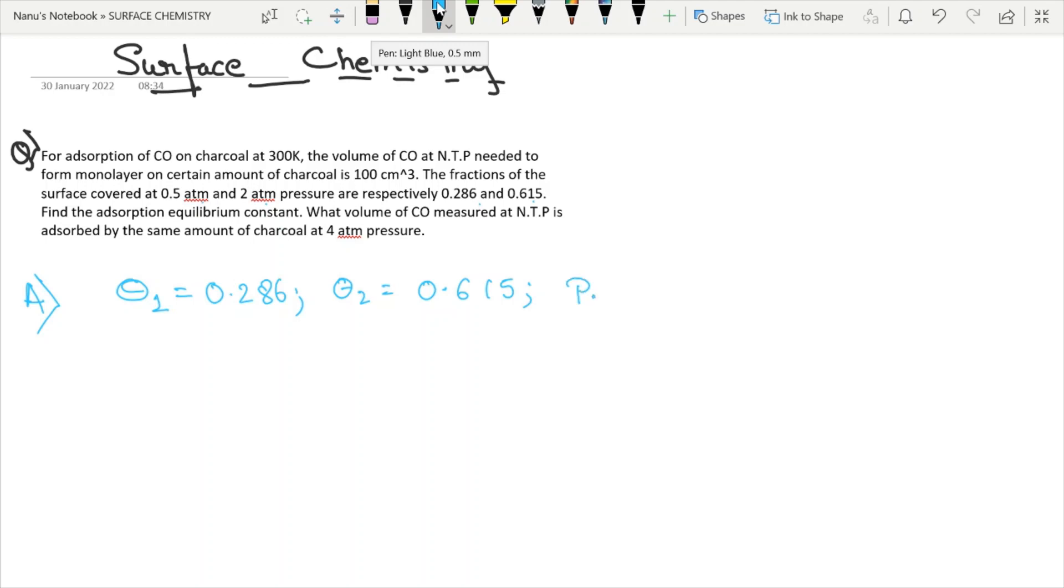And this is the fraction. First pressure given is 0.5 atmosphere, second pressure is 2 atmosphere. By this, we already get to know the form we need to use is Langmuir adsorption isotherm: theta equals Kp over 1 plus Kp. They're asking for the adsorption equilibrium constant, that is K. If we want to find K, we need to make K our subject. K equals theta over p times 1 over 1 minus theta.